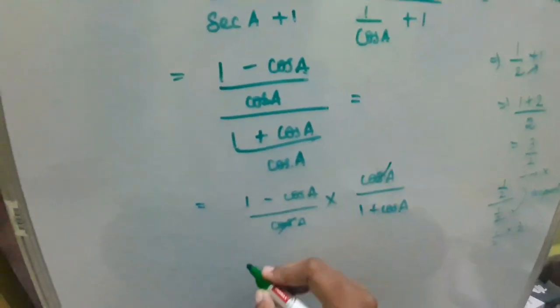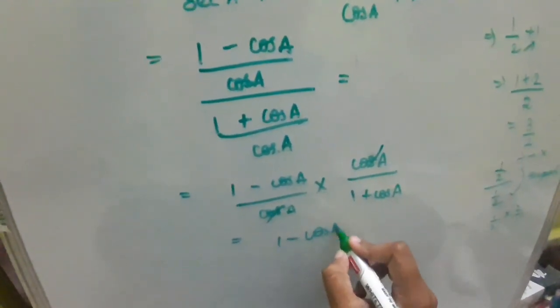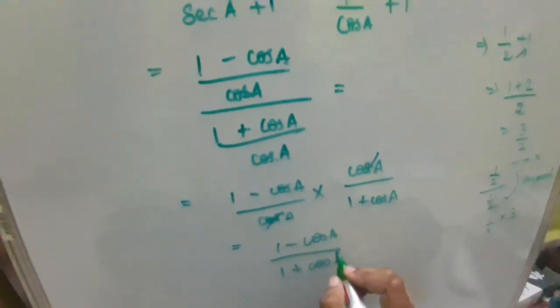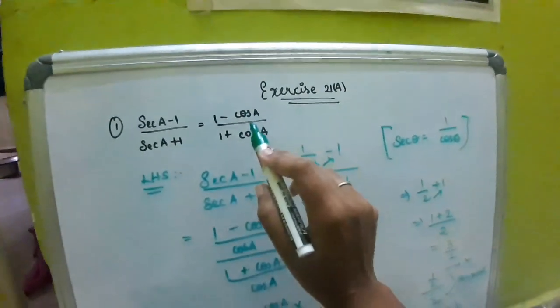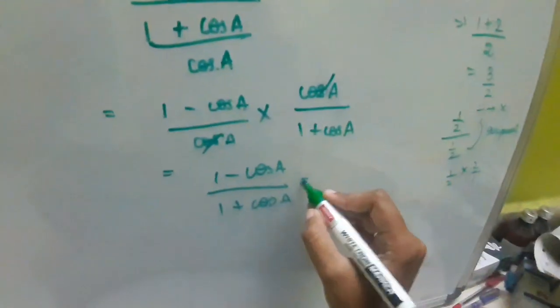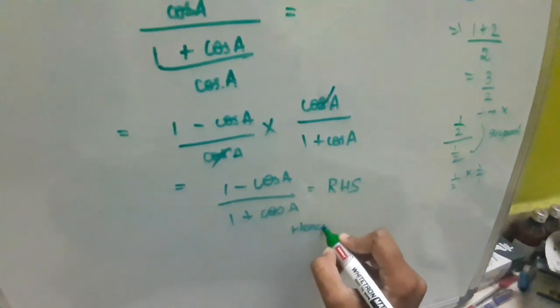Cos A, cos A gets cancelled, similar. So, here 1 minus cos A divided by 1 plus cos A will remain. Now, check the RHS. Yeah, we have matched the RHS. Hence proved.